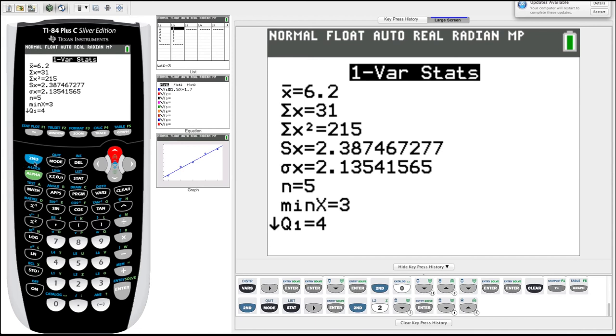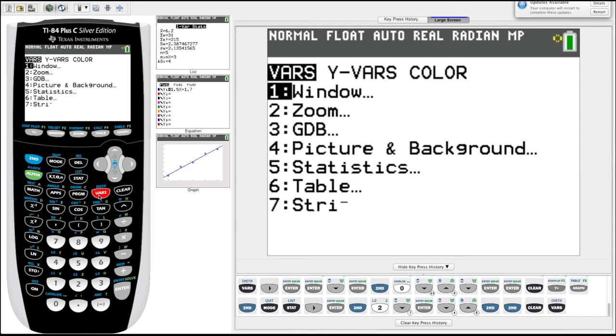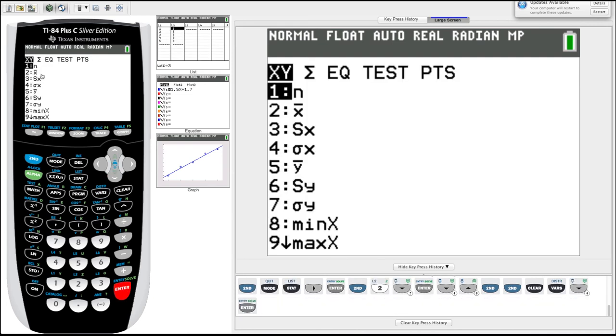And then if we clear all this stuff out, say, oh no, I forgot what the X bar was, or the average was, or I want to use that in a calculation. If I go into variables again, this vars button, and instead of going to Y vars, I'm going to scroll down to statistics, hit enter, and it's going to prompt me with a lot of the things I just had calculated. Let's scroll down to two, X bar, which was 6.2, our average. If we were just to hit enter, there it is, it's stored, it has stored X bar is 6.2.